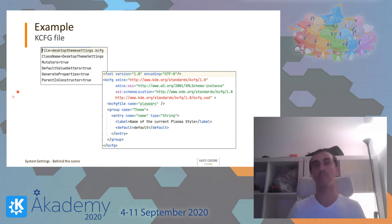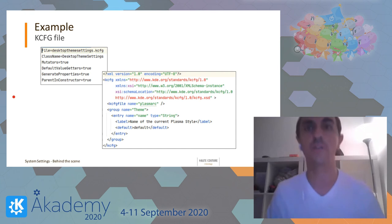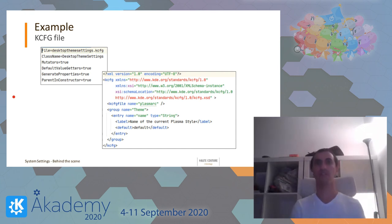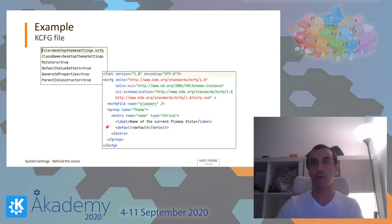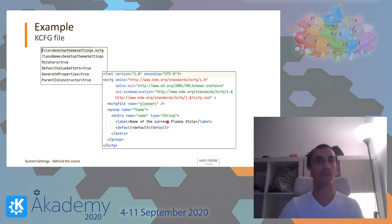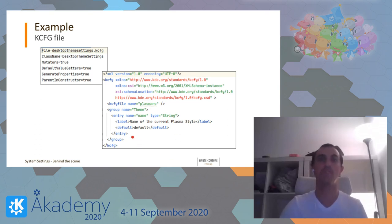Let me show a code example using desktop themes settings, which is an easy one since there is only one entry. On the KConfig Xt side, there are two files: a KCFGC file that tells the compiler which file to compile, the generated class name, and some extra data. Then in the KCFG file you can see there's a file name — the configuration file on disk — the group name, and the entry name. You can also have a label; currently we don't use them, but in the future they could be useful for things like search. There's also the default value.